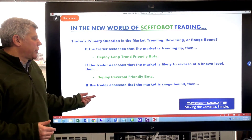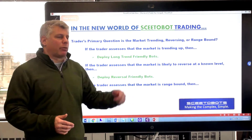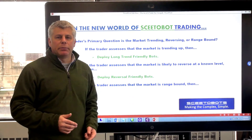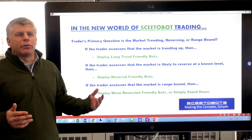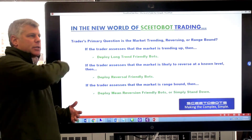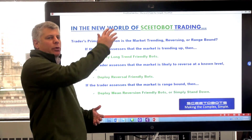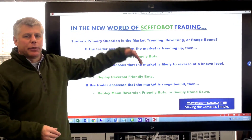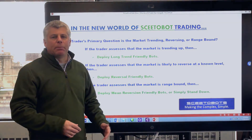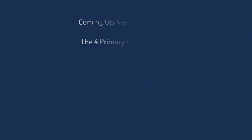If the trader assesses that the market is range-bound, they can deploy mean reversion bots. The market's just going back and forth, very boring — mean reversion back in scale. Coming up next in our series: the four primary categories of Skeetobots.